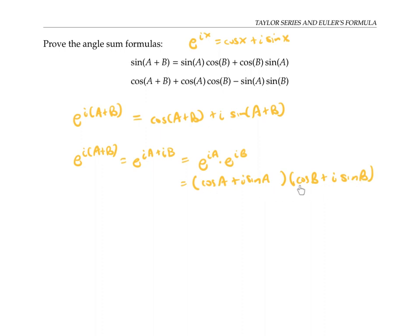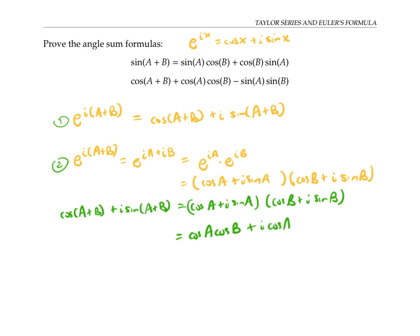So let me set those two expressions equal to each other. And now I'm going to distribute the right side. So I get cosine a cosine b plus i times cosine a sine b plus i times sine a cosine b. And finally, with these last two terms, I get i squared sine a sine b. But remember that i squared is negative 1, so I can rewrite the i squared that way. Let me group my terms, the ones that have i's in them and the ones that don't.